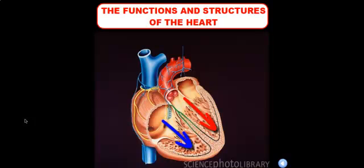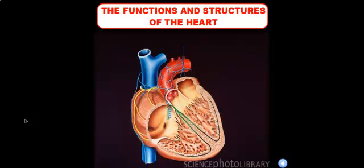The ventricles, the bottom compartments, are the parts of the heart that send blood outside of the heart. The right ventricle sends blood to the lungs, and the left ventricle sends blood to the rest of the body. Between the ventricles and the atria, we have structures called valves. These valves ensure that blood flows in one direction — from atrium to ventricle — with no backflow, so it continuously moves in one direction.